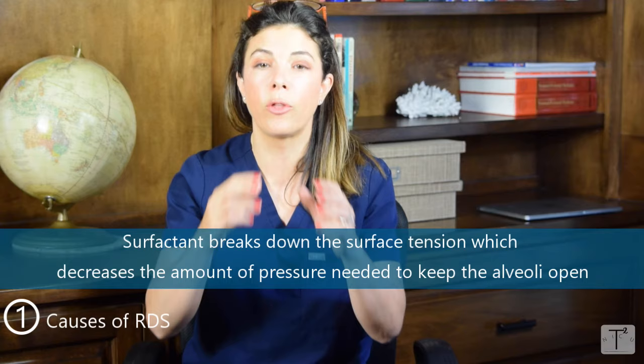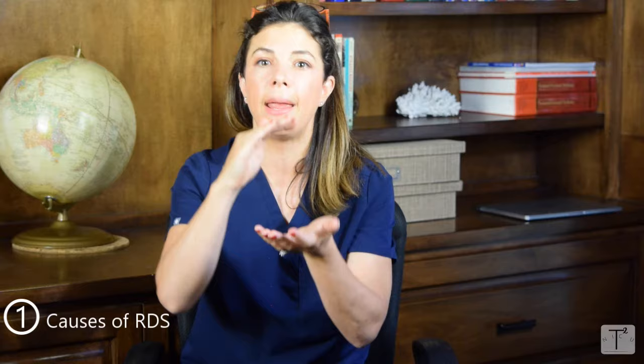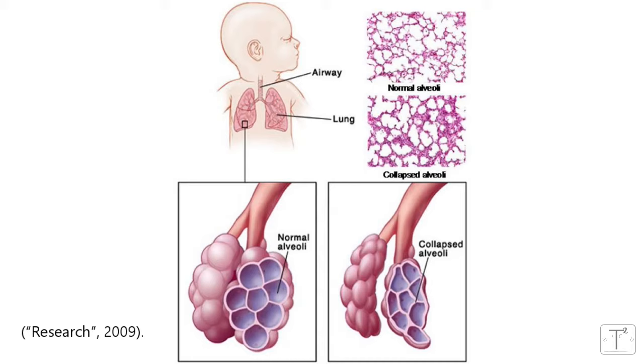What surfactant does is basically act like a detergent — just like when you're washing dishes and pour in dishwasher detergent, it breaks up all those water molecules, breaking down the surface tension. Therefore, the pressure needed to keep that ball of alveoli cells open is much, much lower. We need surfactant to break up the surface tension within the alveoli so that less pressure is needed to keep them open.